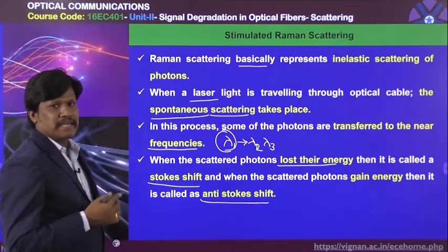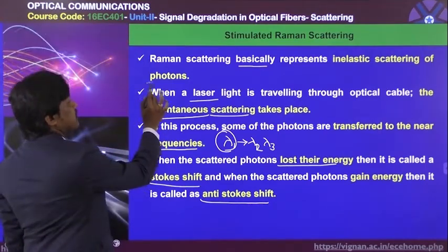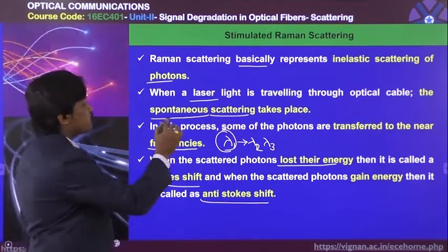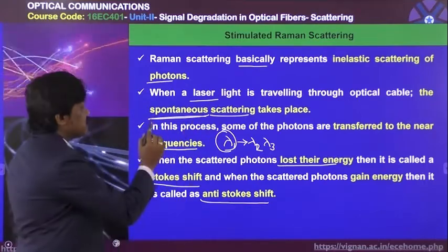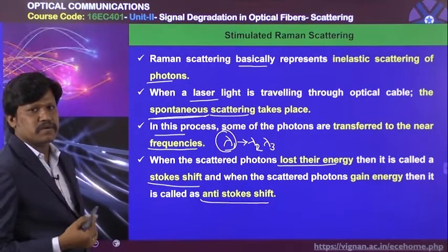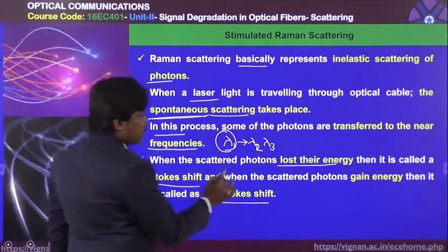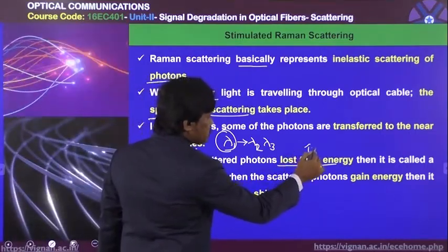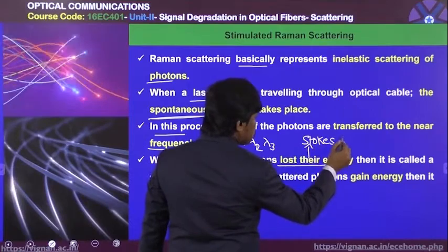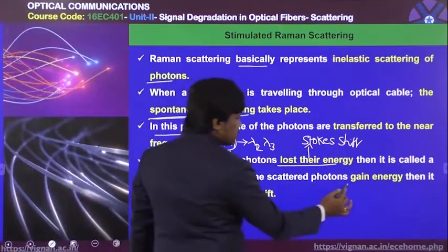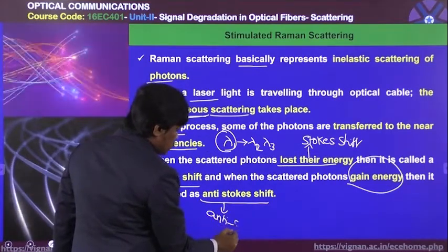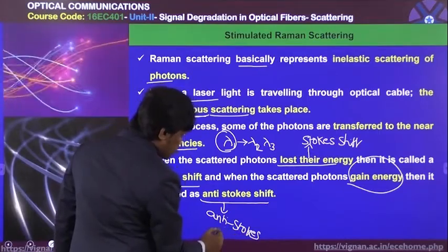Raman scattering basically represents inelastic scattering of photons. When the laser light is travelling through the optical fiber cable, spontaneous scattering takes place. In this process, some of the photons are transferred to near-neighbor frequencies. When the scattered photons lose their energy, this is called a stokes shift. When the scattered photons gain energy, it is called an anti-stokes shift.